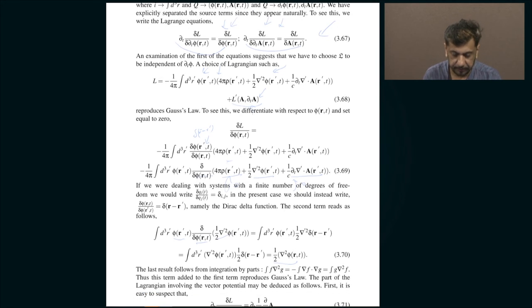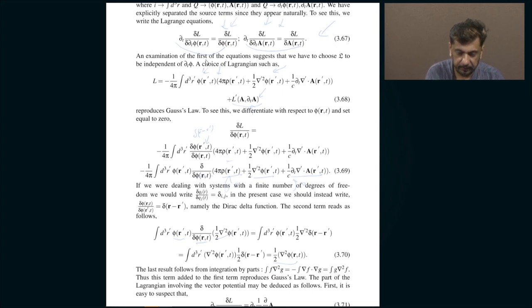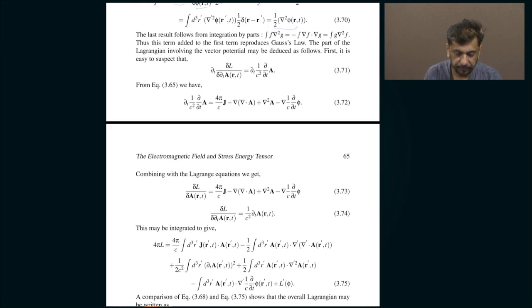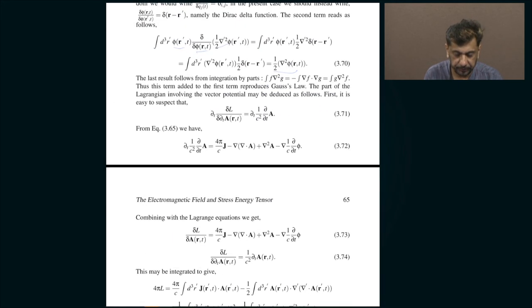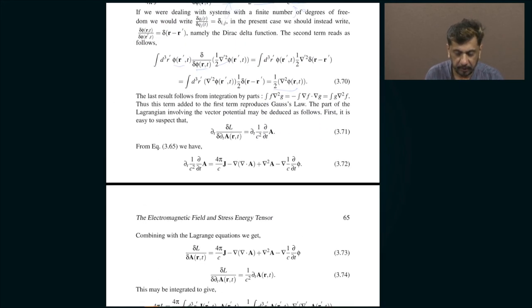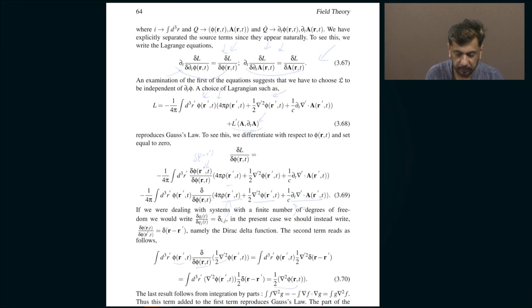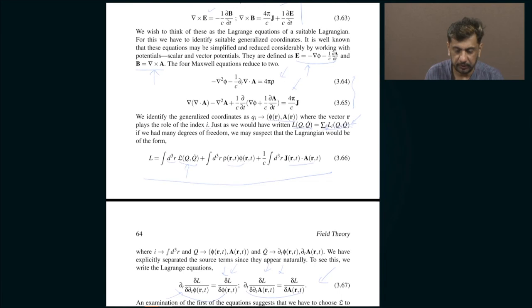If you go ahead and insert this into the Euler-Lagrange equations, you will exactly get equation (3.64). Skipping a few steps, the bottom line is that this particular choice is sufficient for you to reproduce the first of these equations, (3.64).